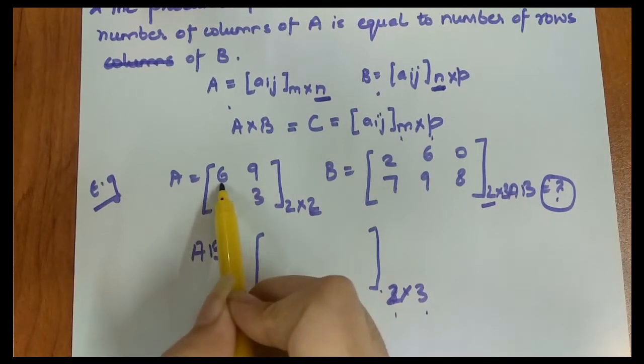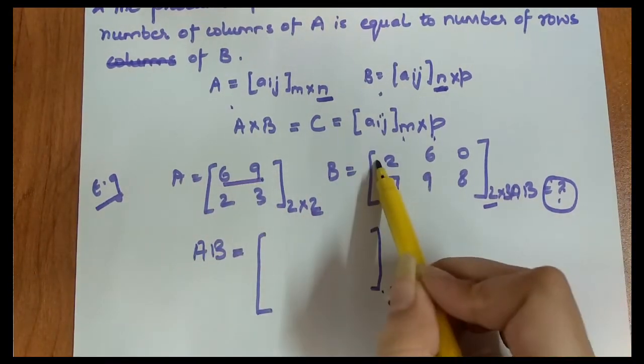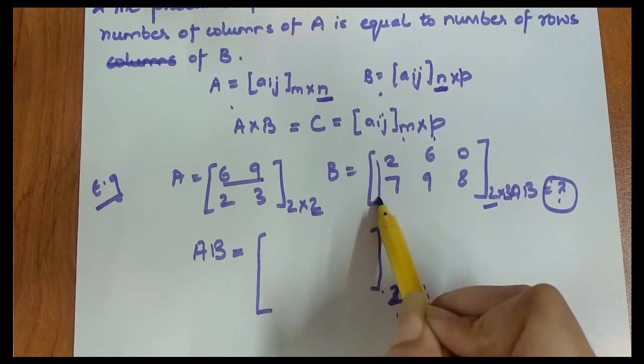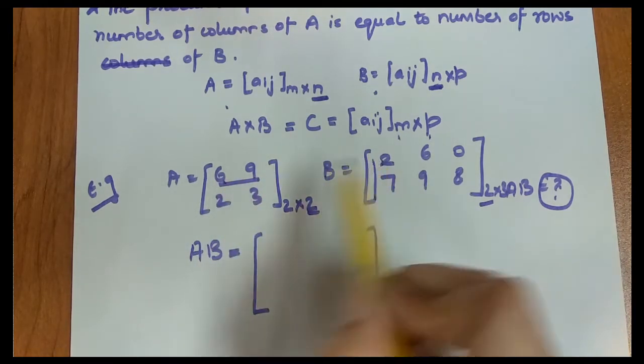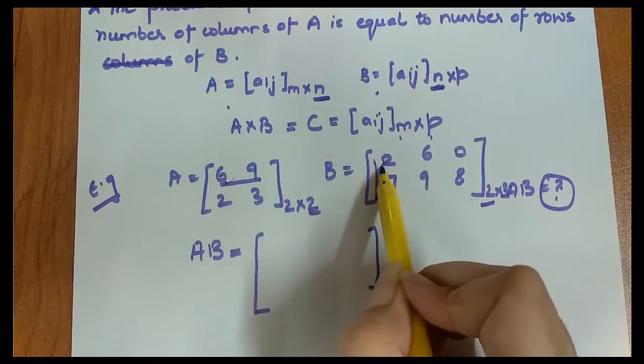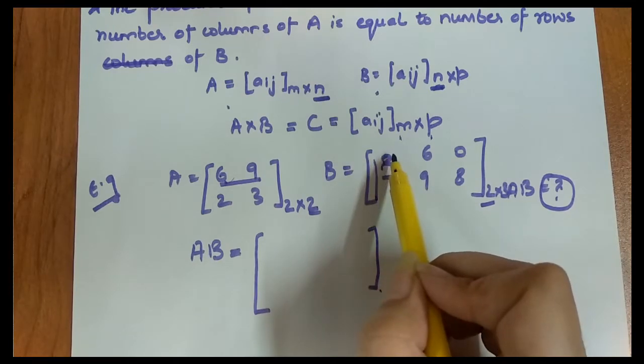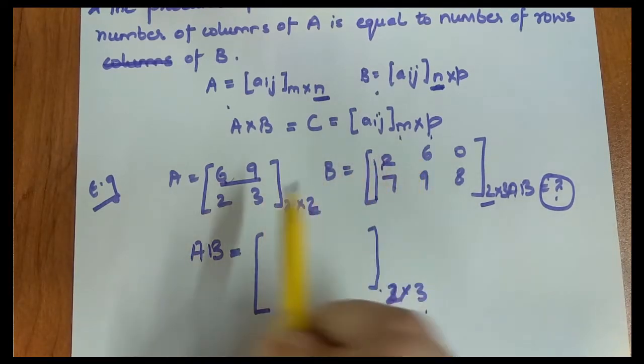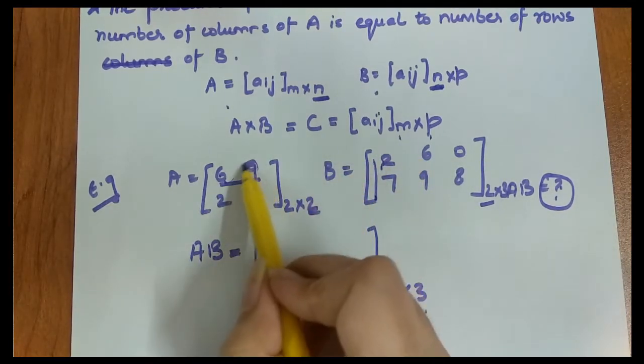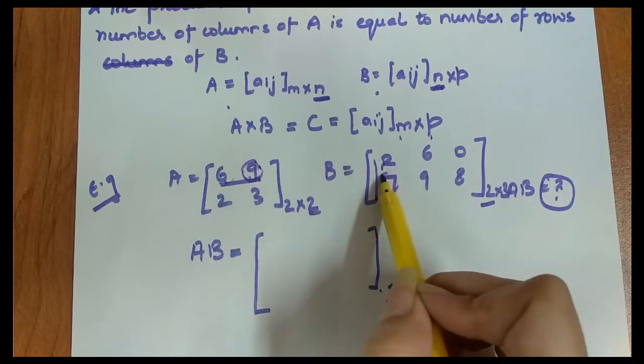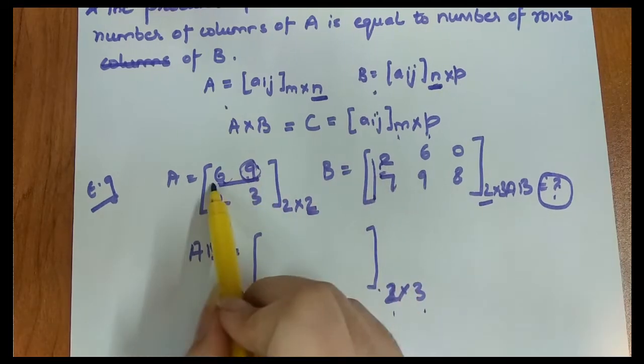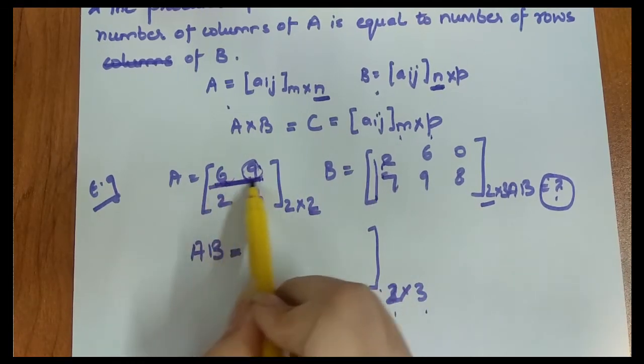In matrix multiplication, what happens is we take the first row of matrix A with the second matrix, and we have additive multiplication. This means you multiply the first element of the first row with the first element of the first column of the second matrix, then plus, then the second element of the first row with the second element of the first column.